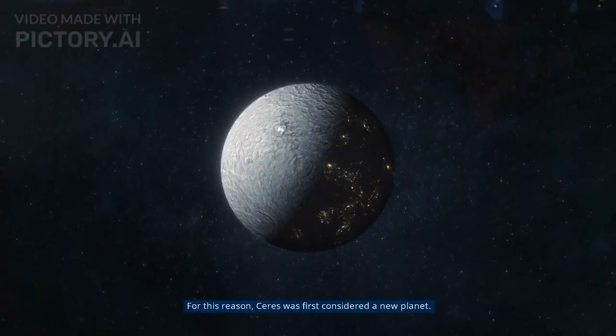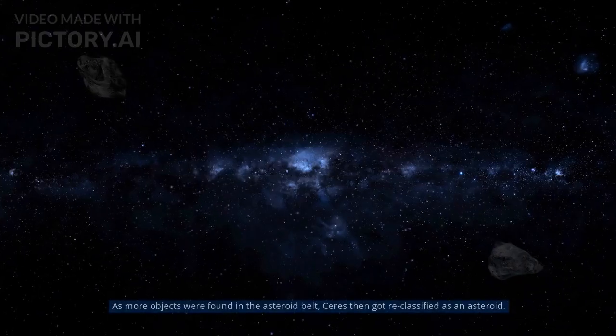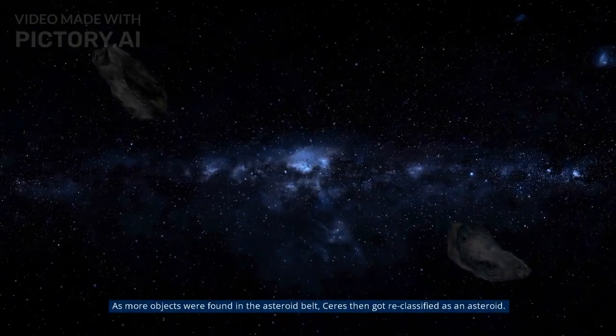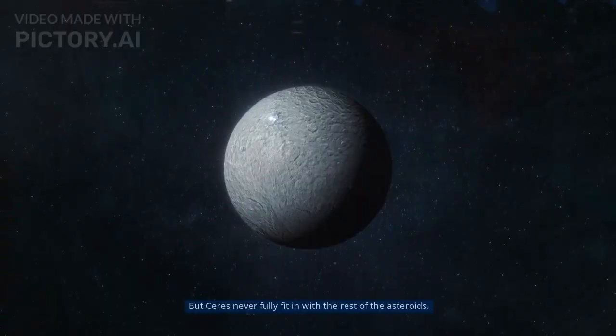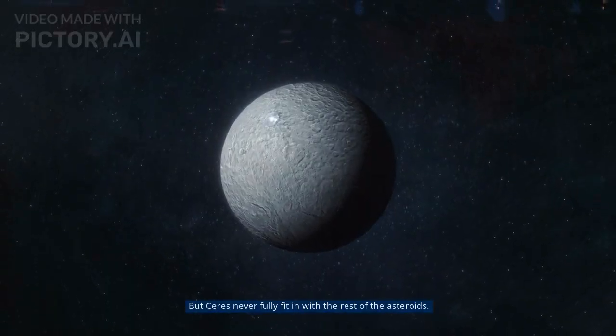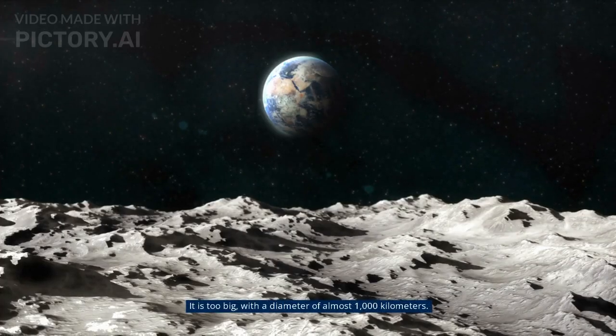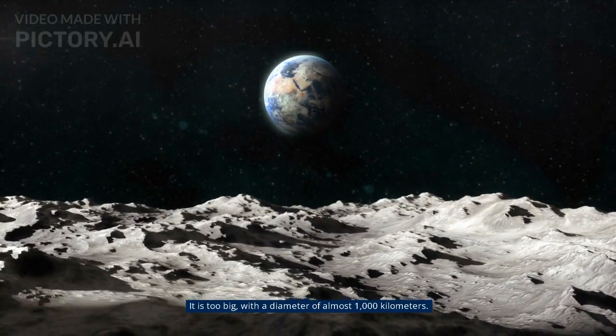For this reason, Ceres was first considered a new planet. As more objects were found in the asteroid belt, Ceres then got reclassified as an asteroid. But Ceres never fully fit in with the rest of the asteroids. It is too big, with a diameter of almost 1,000 kilometers.